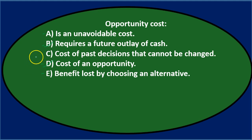Of the remaining options A, C, and E — options A and C sound more like a sunk cost. A sunk cost is a cost from the past that can't be avoided, so both A and C sound similar in nature to sunk cost. Since opportunity cost isn't a sunk cost, I'll eliminate A and C, and go with E. Final answer: opportunity cost is E — benefit lost by choosing an alternative.